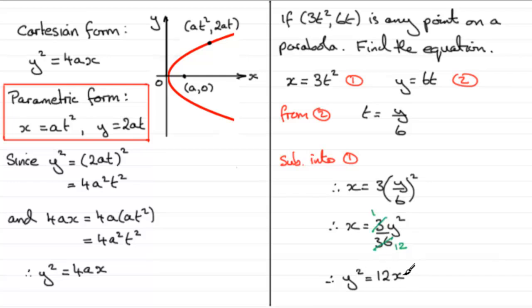We could have got to this result a lot quicker though. If we know that the equation of a parabola has the form y² equals 4ax and the parametric coordinates are (at², 2at), clearly you can see that a must have been 3. So y² equals 4ax, we could have just done 4 times the a value, 4 times 3, which would have given us 12. But nonetheless, I wanted to show you how we can get the Cartesian equation when we've got the parametric form.